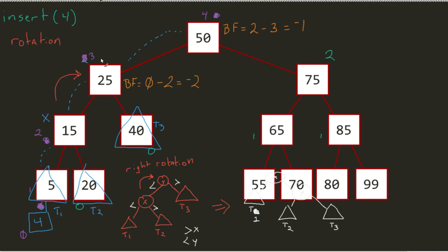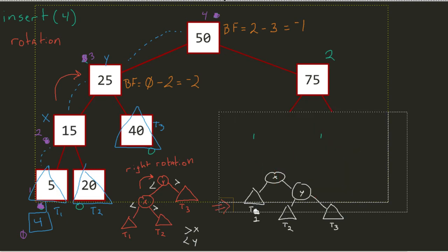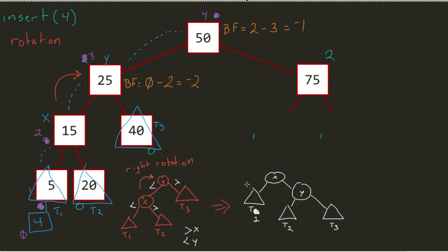If 15 was x and 25 was y, that rotation that we were just talking about, as you can see, what we will do is we'll make 15 the parent, 25 the child. So 15 the parent, 25 the child. 40 is going to be given to y. And 5 will be given to x. And then that 20 will be given to y.